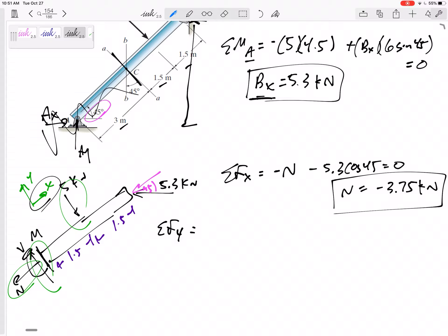Let's sum the forces in the Y direction. Here's my Y direction. So V is pointed that way, 5 is pointed that way, and then this component would be pointed up. Positive 5.3 sine 45. So this V would be positive 1.25 kilonewtons.